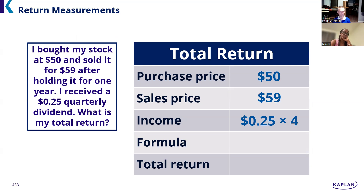I also want you to get more comfortable with the language of the test. Cost basis is simply when you turn your money into the investment — so $50 is my cost basis. Then $59 is when we turn the investment back into money, and that's called sales proceeds. When I net those two, I get a $9 gain. With 25 cents in income over four quarters, I get another dollar.